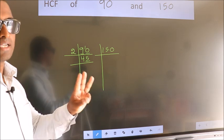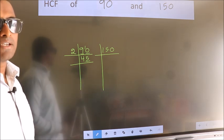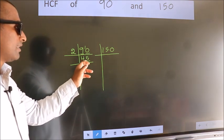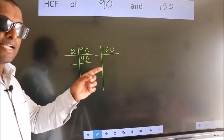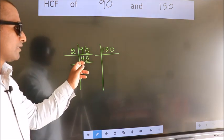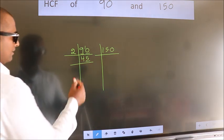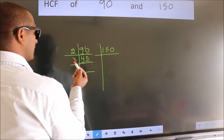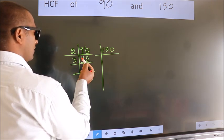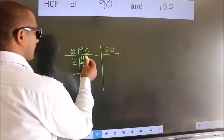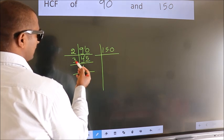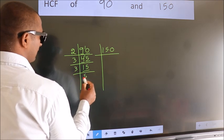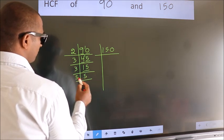Next prime number is 3. To check divisibility by 3, we add the digits: 9 plus 0 is 9. Wait — for 90, we get digit sum 9. Is 9 divisible by 3? Yes. So take 3. A number close to 4 in the 3 table is 3 once 3. 4 minus 3 is 1, carried forward: 15. We get 15 in the 3 table as 3 fives 15. Now 5 is a prime number, so 5 once 5.